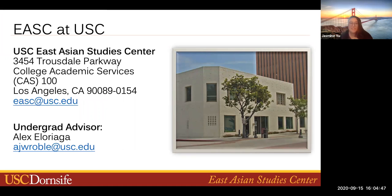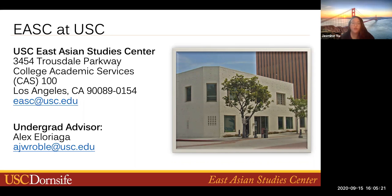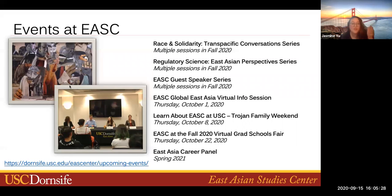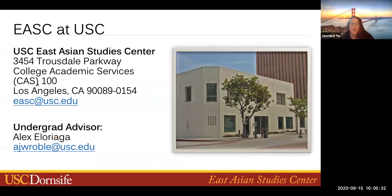Under normal circumstances, this is where you would find us. EASC is located in the College Academic Services Building, the white building on the corner of Truesdale and West 34th Street. You've probably passed us on the way to the USC Village. As soon as we can return to campus, please feel free to pop in and say hello. Our mailing address is on the slide, as well as the best email to contact us. That email, EASC at usc.edu, only goes to Grace, Alex, and me, and one of us will respond as soon as we can. Our undergraduate advisor Alex Illoriaga's email is also provided on the slide.